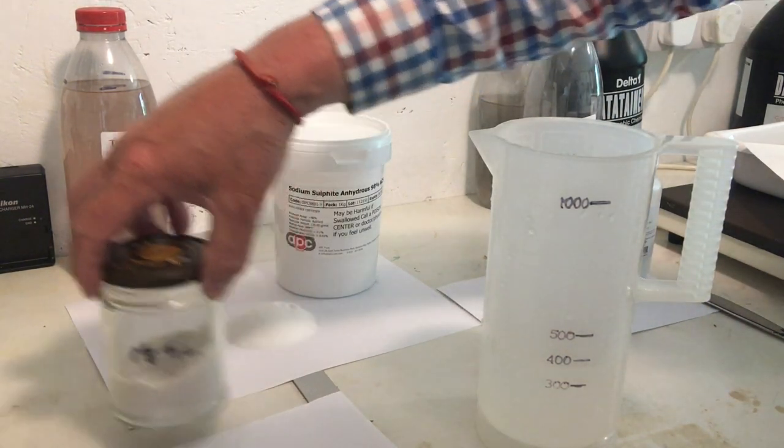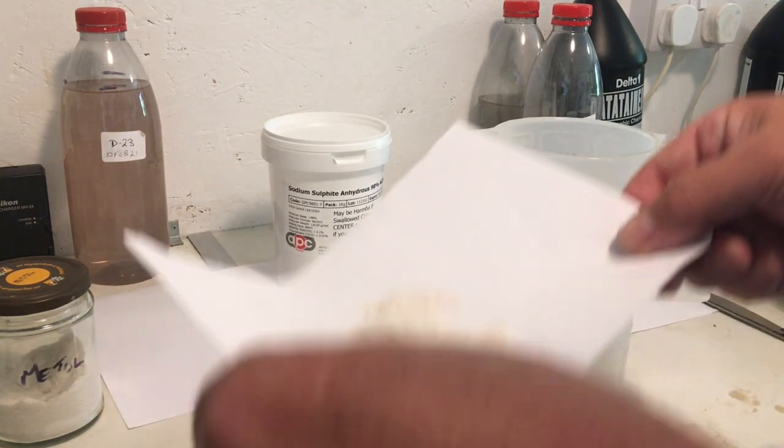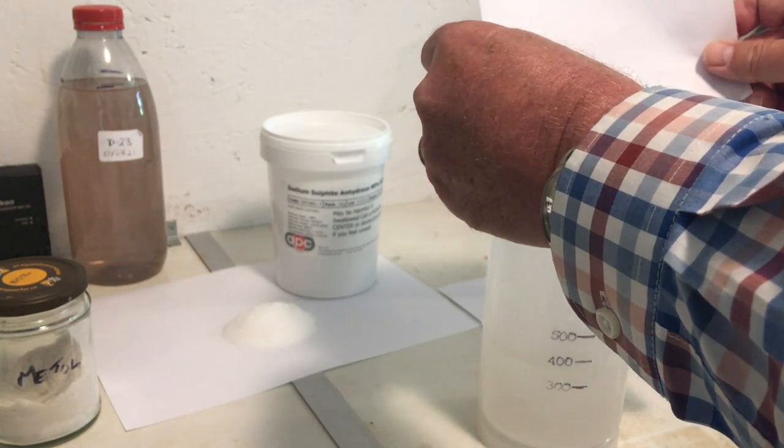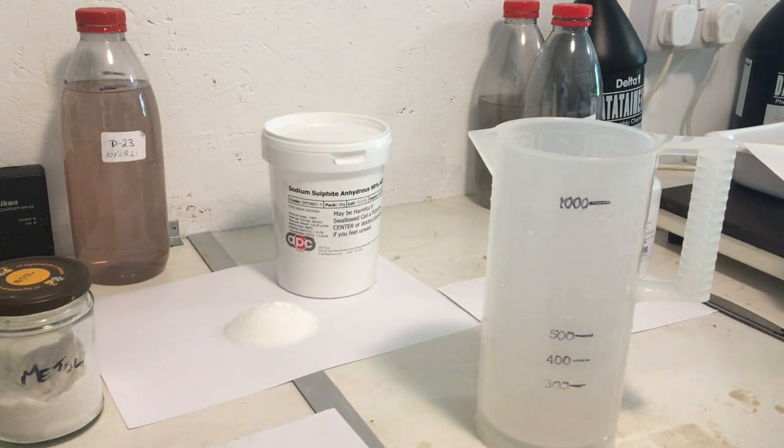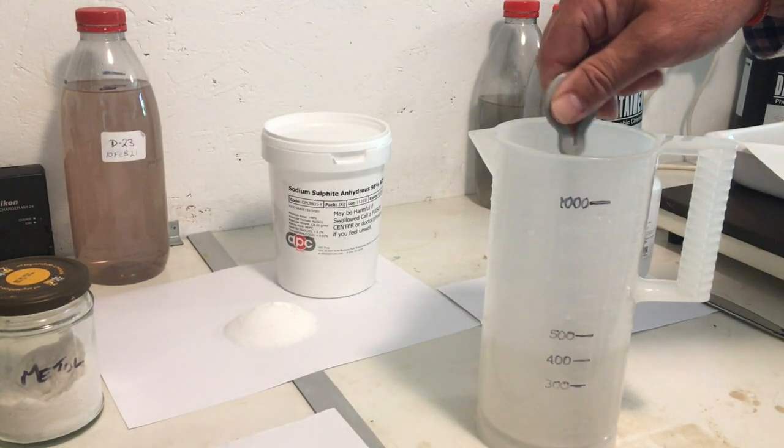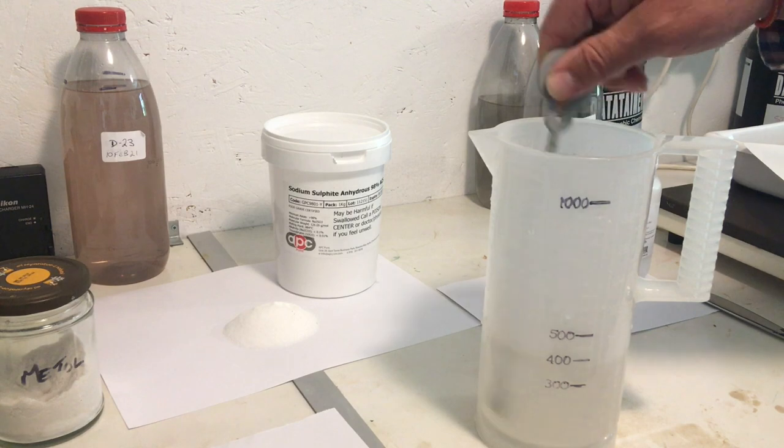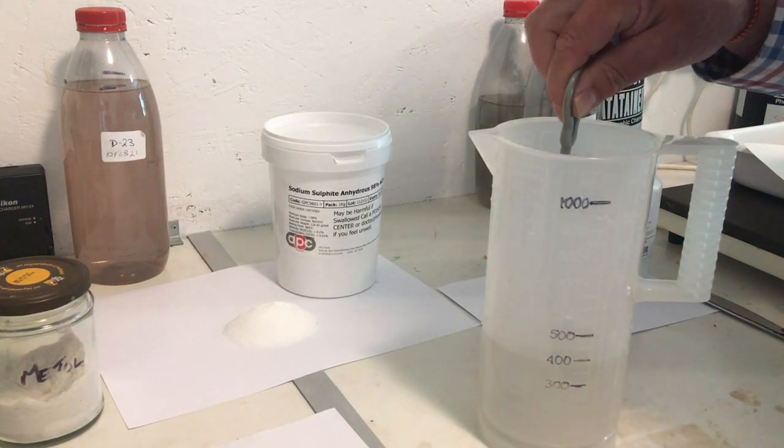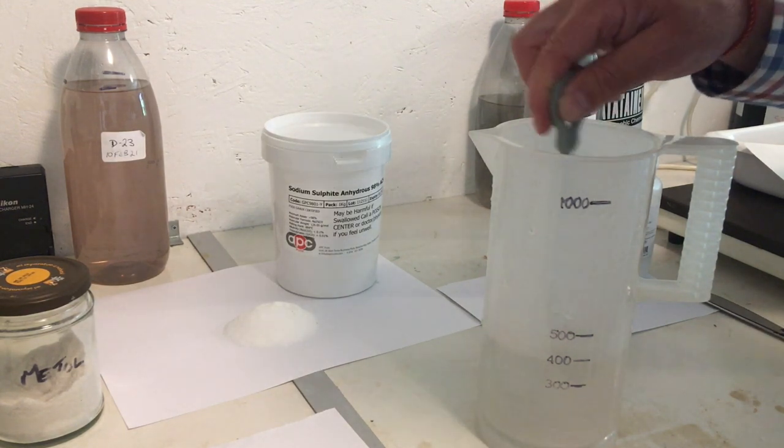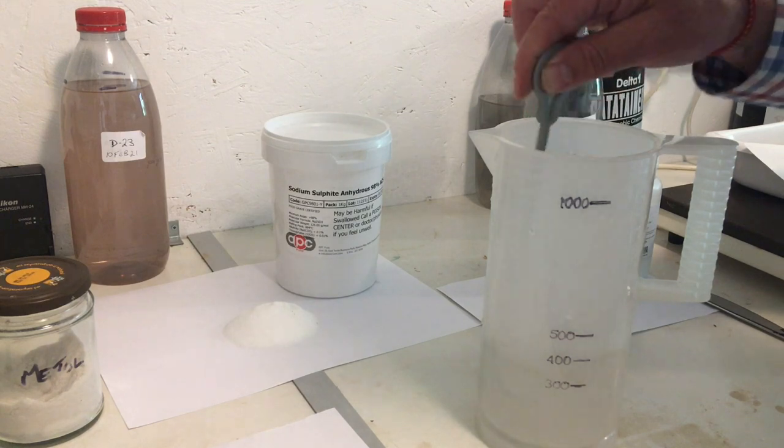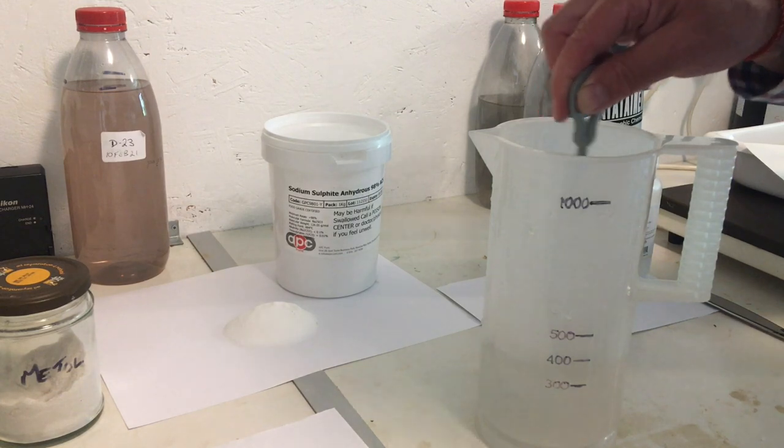I'll dissolve that pinch of sulfite in there. And then we're going to add our metol. Now by adding the antioxidant you're guaranteeing that there's no oxygen to oxidize the metol. If you put the metol in first you have a chance that some of it is going to become oxidized and become useless. I'm looking down inside here and the metol is mostly dissolved. A little bit more stirring. There, it's all into solution.